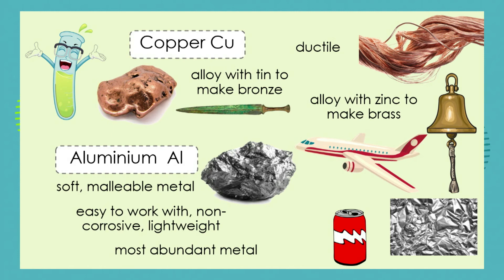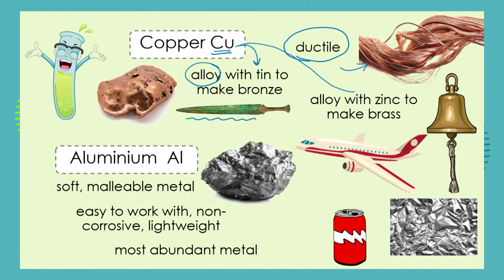Copper has the symbol Cu and is a very ductile metal, which means we can pull it into long threads to make electrical wires. We can also make alloys from copper: an alloy of copper with tin makes bronze, and an alloy of copper with zinc makes brass. These are shiny copper-coloured materials that you might find around your house.